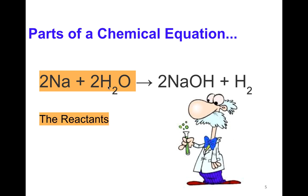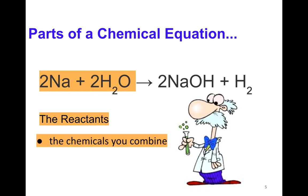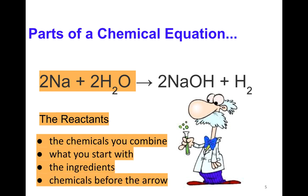So looking at the chemical equation, the things on this side of the arrow, so on the left, are the reactants. You've heard these terms before, but we're just going to apply them to a chemical equation now. The chemicals you combine, what you start with, the ingredients, chemicals before the arrow.